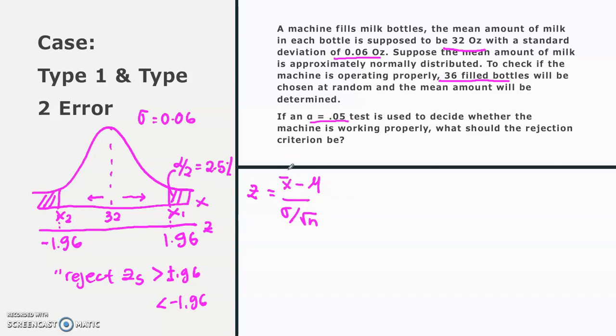So what we're looking for is this x. We know that the z is 1.96 or the standardized value is 1.96. So what is the amount of x1 here? To get it, we just need to insert 1.96 equals x1 minus the mean which is 32 divided by the standard deviation 0.06 divided by root of 36.